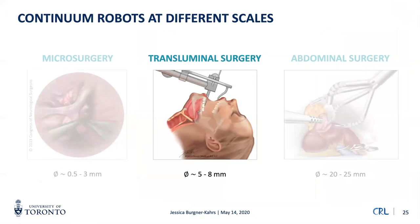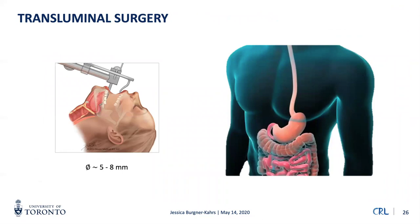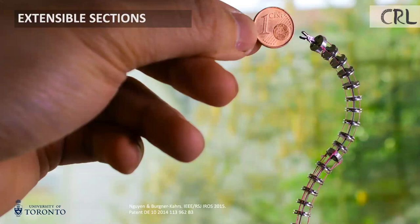We're also working on transluminal surgery robots — slightly larger since they enter the body through natural orifices like the mouth or nose. The challenges are quite different here because the tool needs to traverse a long, narrow anatomical pathway — for example, the esophagus or digestive tract. The particular problem we're interested in is building a continuum robot that is deployable but can actively steer itself and hold itself, as opposed to the catheters seen earlier.